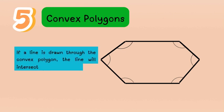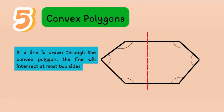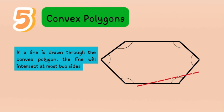Another property of convex polygons: if a line is drawn through a convex polygon, the line will intersect at most two sides. For example, drawing a line through this polygon, you can see it only crosses two sides. No matter where you draw the line, it will intersect at most two sides.